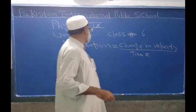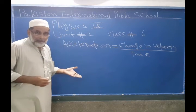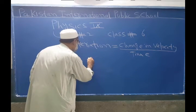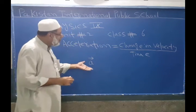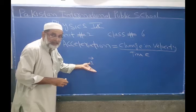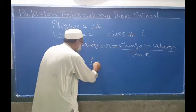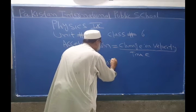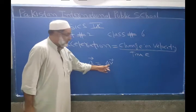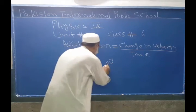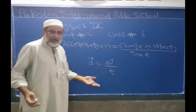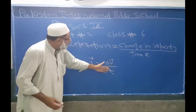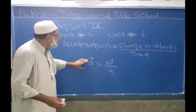Change in velocity divided by time. Acceleration is denoted by small 'a'. Acceleration is a vector quantity. Acceleration a is equal to change in velocity. Delta v is the representation of change in velocity. So a is equal to delta v divided by T. This is the mathematical form of acceleration.